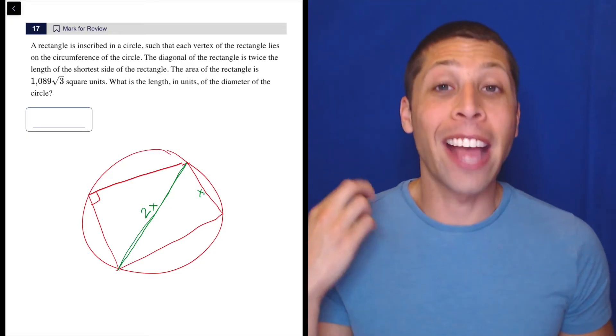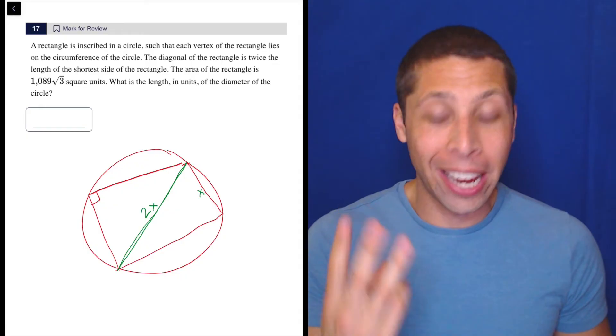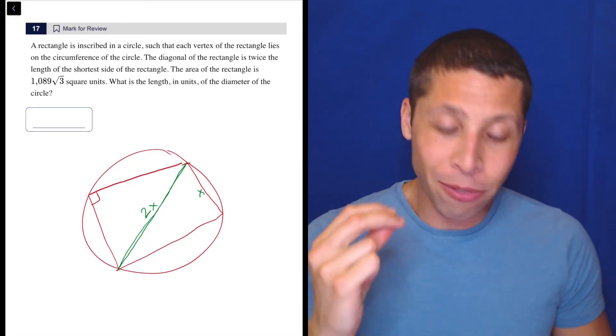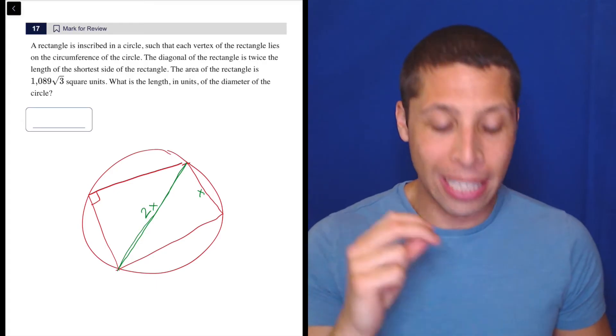Circles, rectangles, and triangles, and look what we have here. All three. Circle, rectangle, that was told to us, but by drawing that diagonal, we made a triangle, and that's super important.